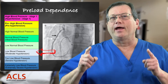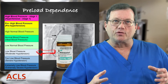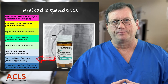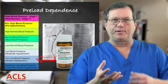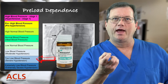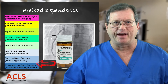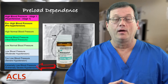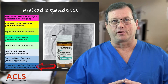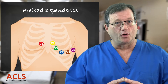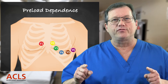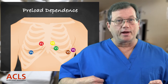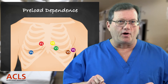Then I add nitro, which vasodilates and further drops the CVP. Now I have an even lower CVP, an RV that's not working, and the patient's pressure tanks. That's the problem - not the inferior wall, but the right ventricle infarcting. So in the presence of any inferior wall MI, you want to take a V4R and see if the right ventricle is involved.